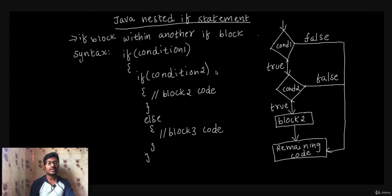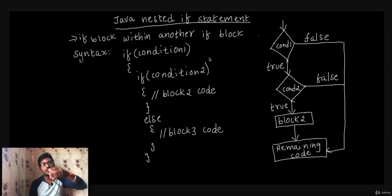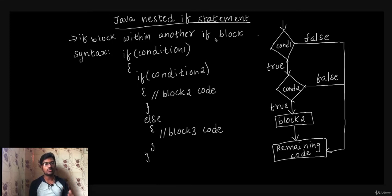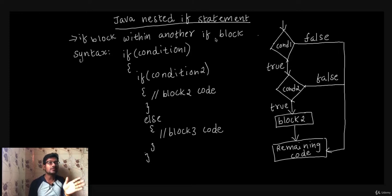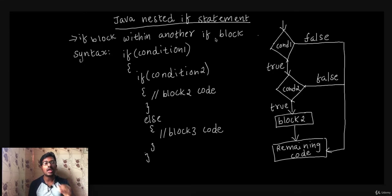Nested if is a complicated structure. In Java nested if, there is an if statement nested inside another if block. So if a condition is satisfied, then there is a set of statements, and within that, there are nested if statements.